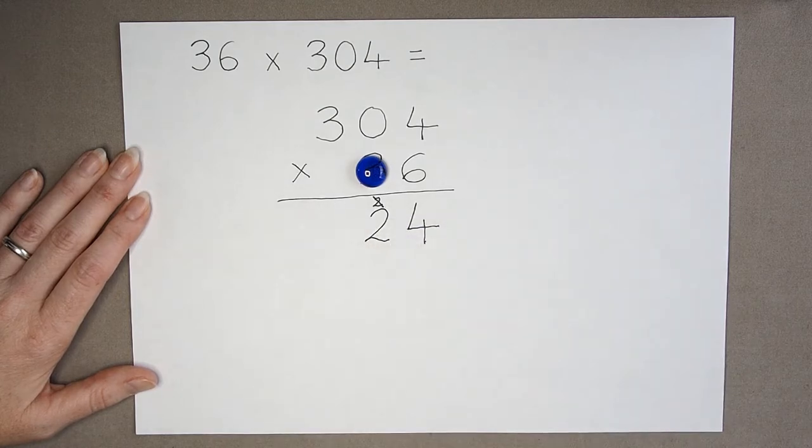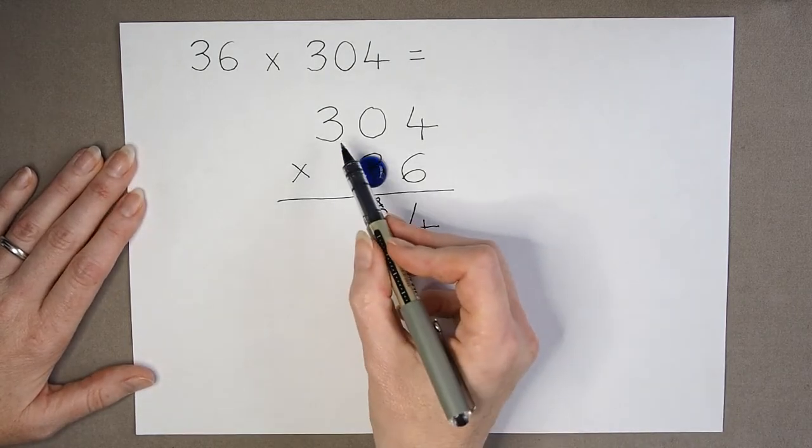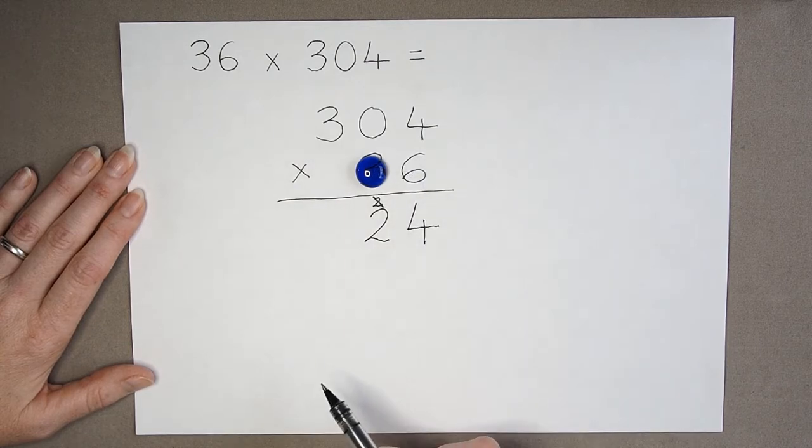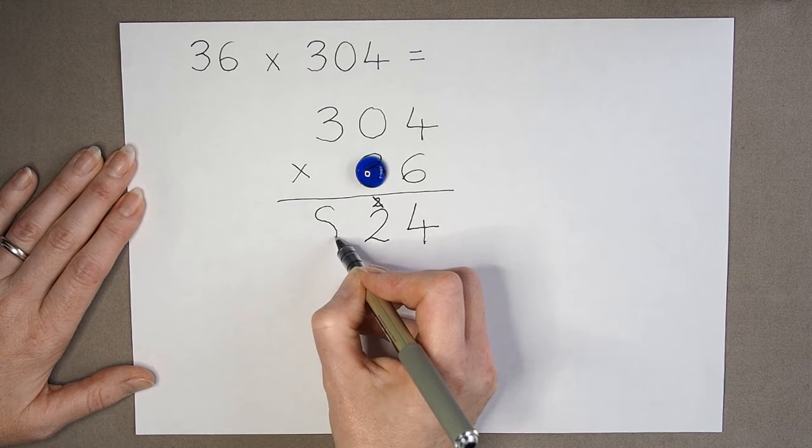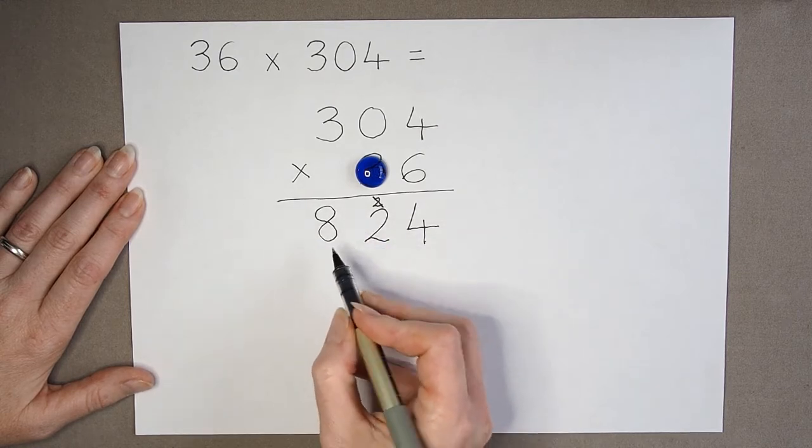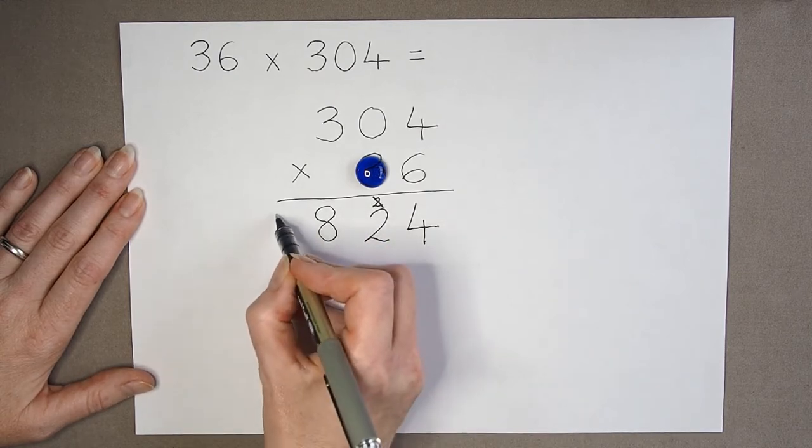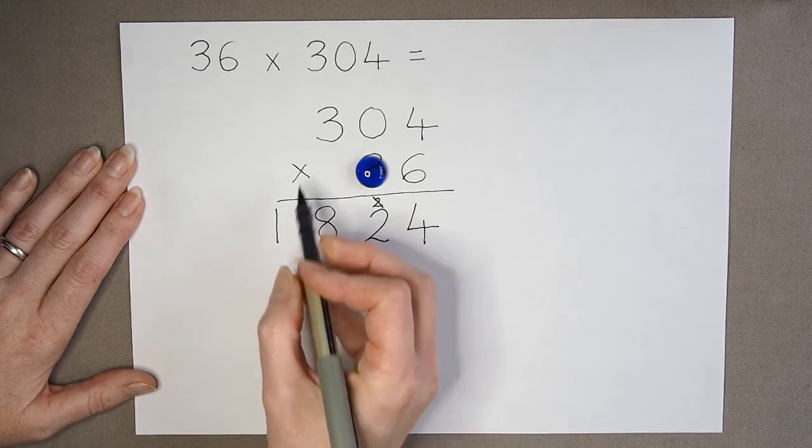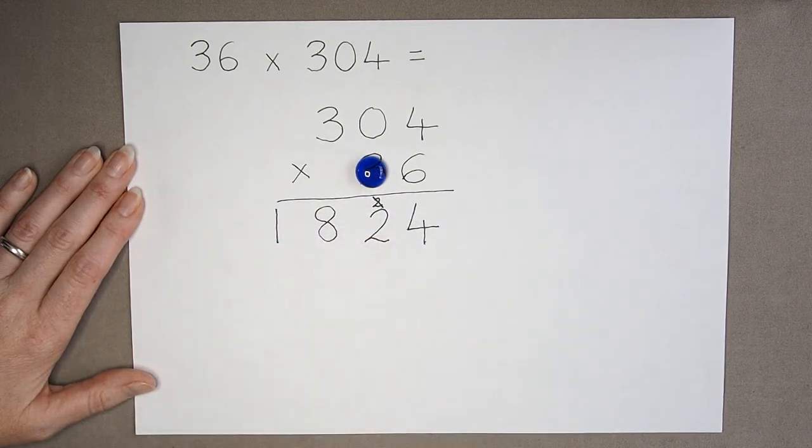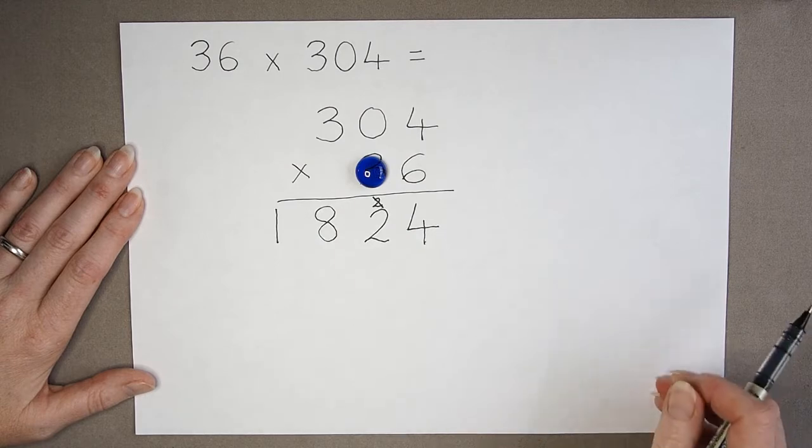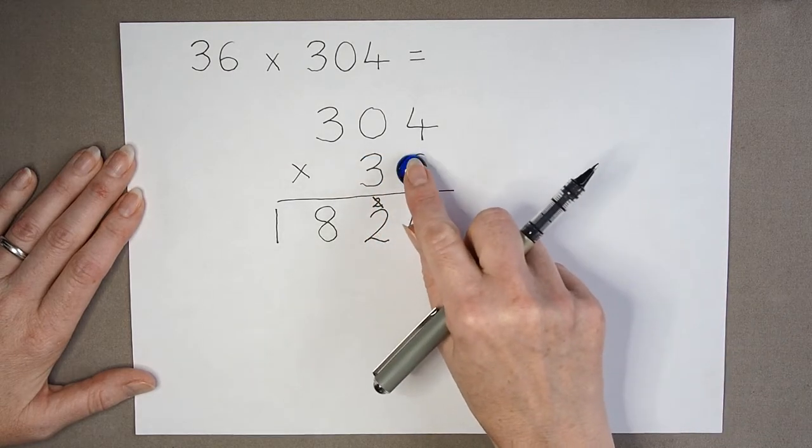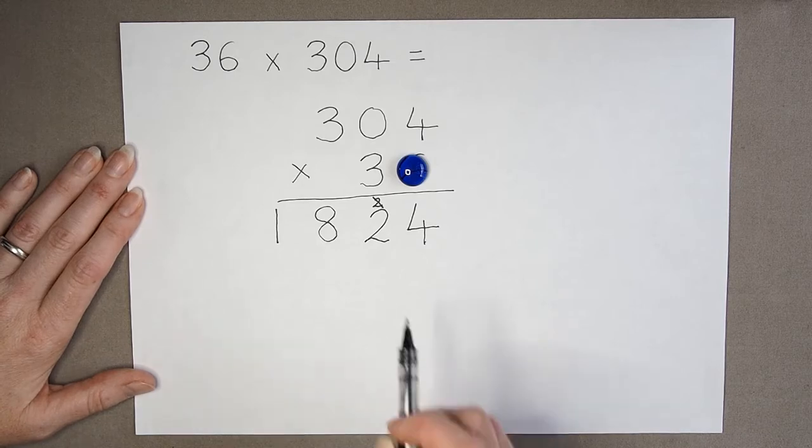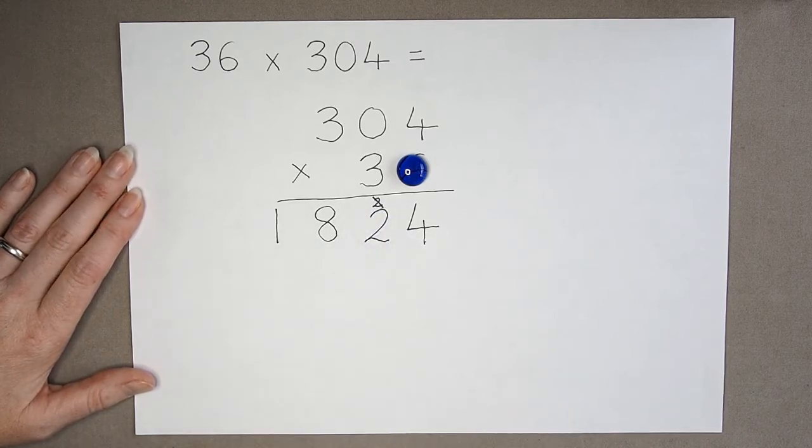So I've got 2 in my tens column, and then 6 multiplied by 3 is 18. So I can put the 8 in my hundreds, and I can write the 1 straight into the thousands because I don't have anything else left to do. So there's the first line of my calculation finished. And now I'm going to move the counter. I've multiplied by the units. I'm going to multiply by the tens.